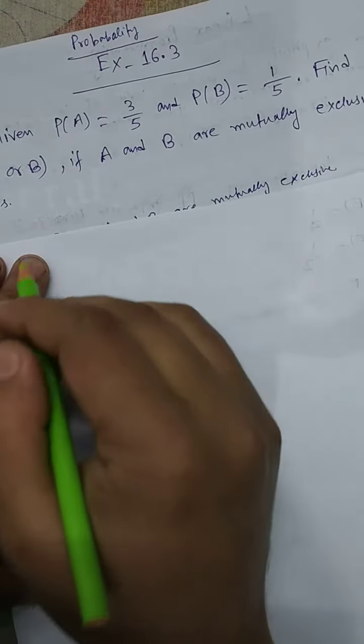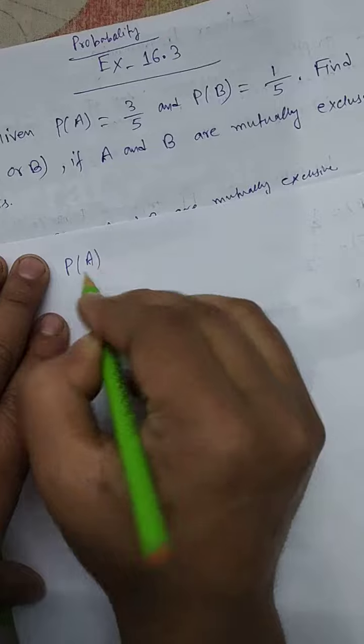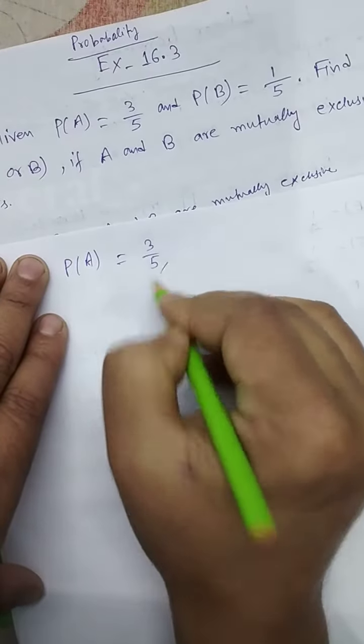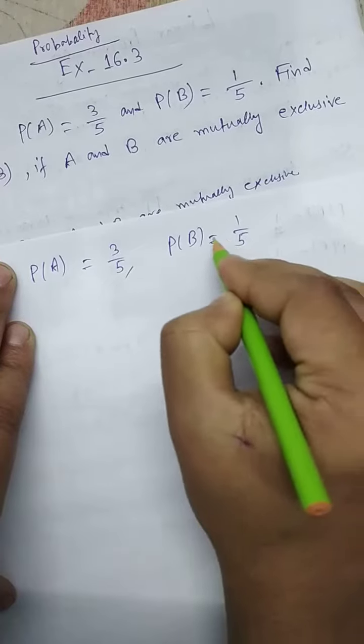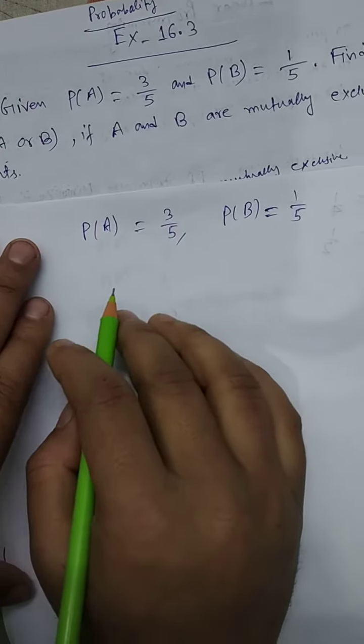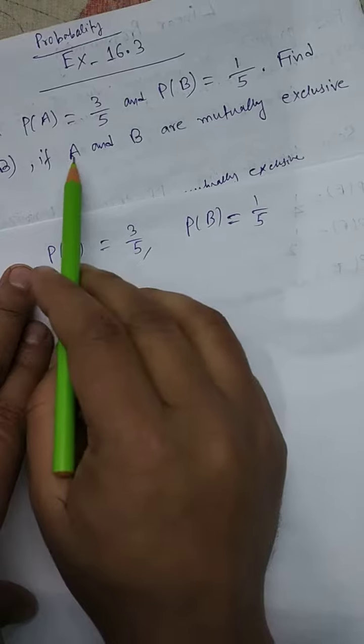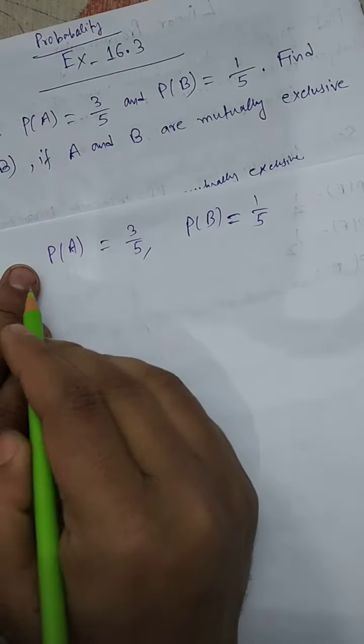So here, given that probability of A equals 3/5 and probability of B equals 1/5, and also given A and B are mutually exclusive.